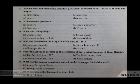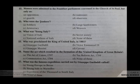Who was proclaimed the king of United Italy in 1861? Your options are A Giuseppe Garibaldi, B Victor Emmanuel II, C Giuseppe Mazzini, D Cavour. The correct answer is B, Victor Emmanuel II.